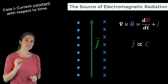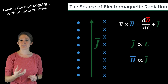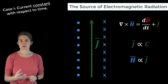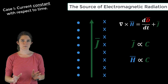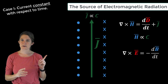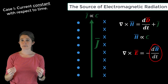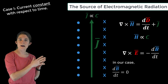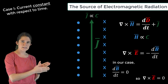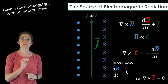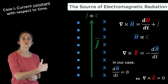Ampere's law says that this line current will be encircled by a magnetic field. The magnitude of this magnetic field will be directly related to J, the source current. Since J is constant with respect to time, the magnetic field will also be constant with respect to time. Faraday's law says that for a magnetic field to produce an electric field, it must have a non-zero time derivative. So our time-constant magnetic field will not produce an electric field. For this case of an infinite line current constant with respect to time, the total field solution is a static magnetic field directed in circles around the current.